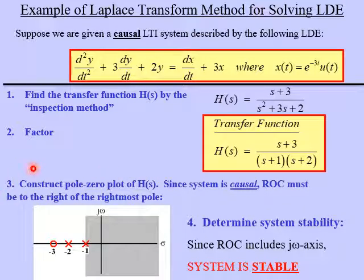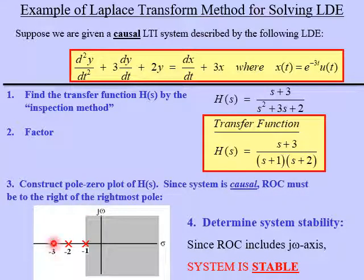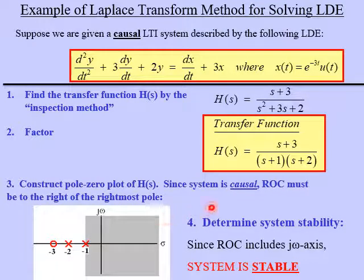Next, let's construct a pole-zero region of convergence plot for the transfer function. We know that the system is causal, so the region of convergence must be to the right of the rightmost pole. Plotting the poles and zeros on the s-plane: the zero is at s = -3, and the poles are at s = -1 and s = -2. For a causal system, the ROC is to the right of the rightmost pole, which is at s = -1, so here is our ROC.